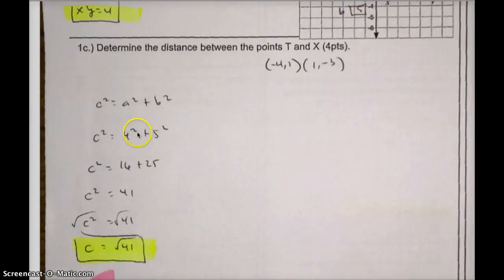4 squared is 4 times 4, which is 16. 5 squared is 5 times 5, which is 25. 16 plus 25 is 41. To get rid of the power of 2, you take the square root of both sides. The square root and the exponent cancel, so you're only left with C. C equals the square root of 41. If you put that into your calculator and got approximately 6.4, then I also gave you full credit.